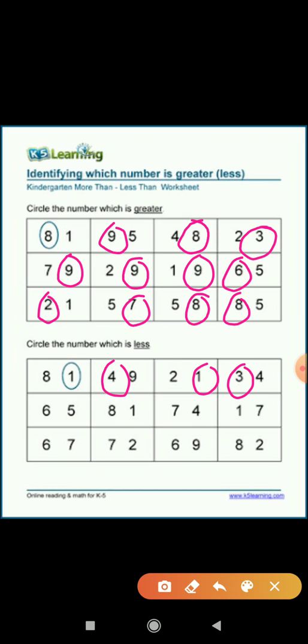Five and six. Five is less than six. Eight and one. One is less than eight. Seven and four. Four is less than seven. And one and seven. One is less than seven. Six and seven. Six is less than seven. Seven and two. So two is less than seven. Six and nine. So six is less than nine.